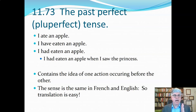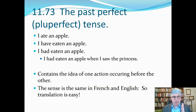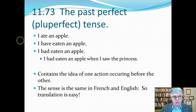If I said 'I had eaten an apple,' that means there's some point in the past, and I had eaten an apple before then. 'I had eaten an apple' means that apple was eaten by me sometime before another point I'm talking about. Keep this timeline in mind when you translate, and it will make things go a lot smoother.